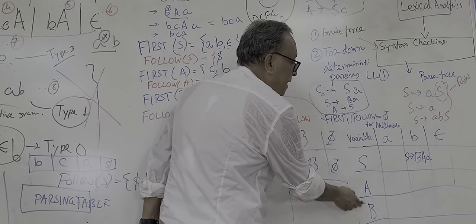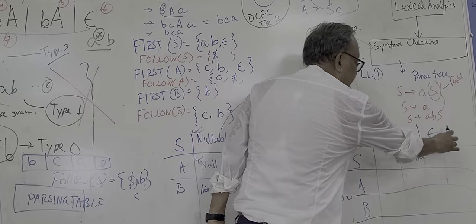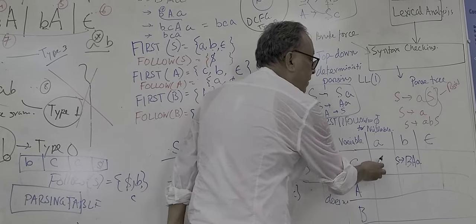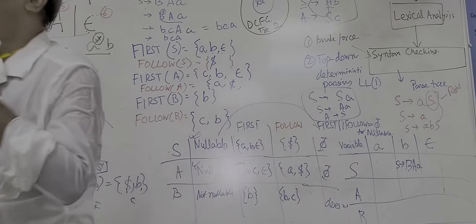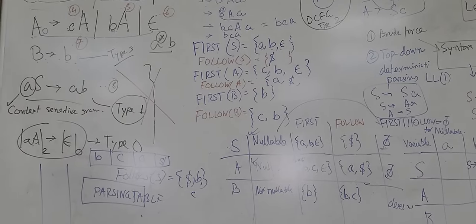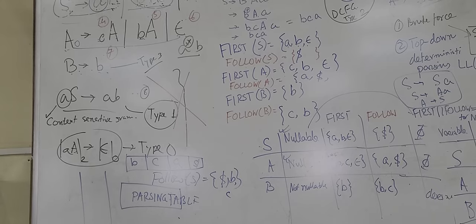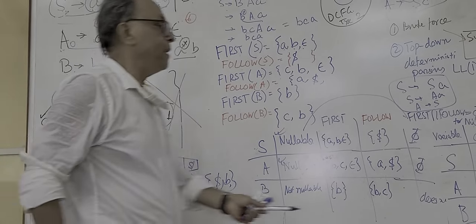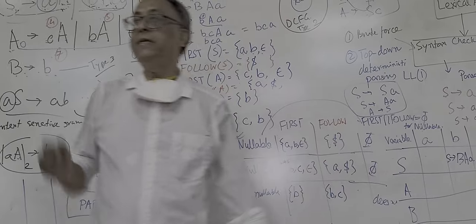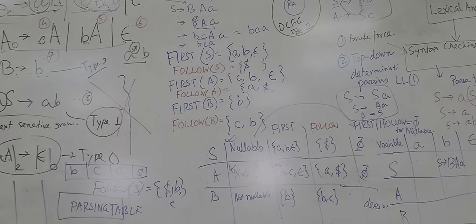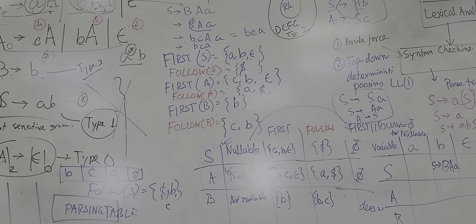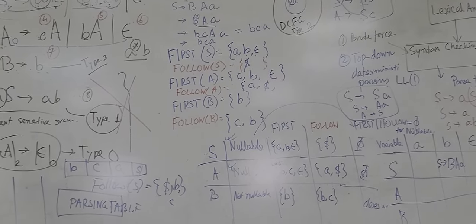Then we can create a parsing table. Variable comes here, and terminals come here. For every variable and every terminal, there can be only one move. If any box is empty, then there is no problem. This is what your parsing is using. So this is the case of LL(1) parsing. There is no backtracking. Any doubt about this?